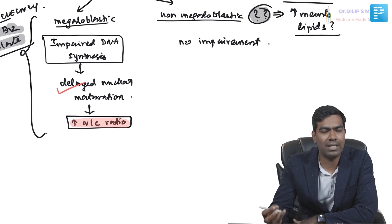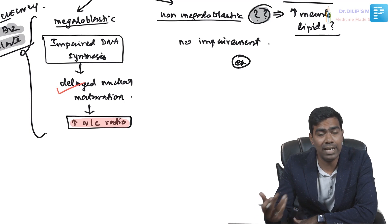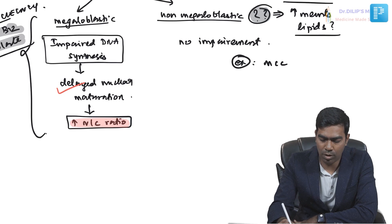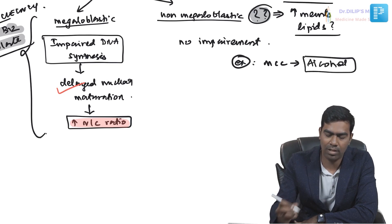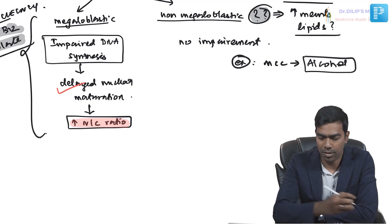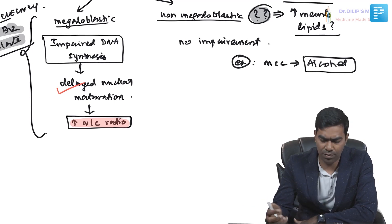The classic examples of non-megaloblastic macrocytosis have been discussed in detail in the basics of anemia section. But the most common cause is alcohol — alcohol is the most common reason why you get non-megaloblastic macrocytosis.